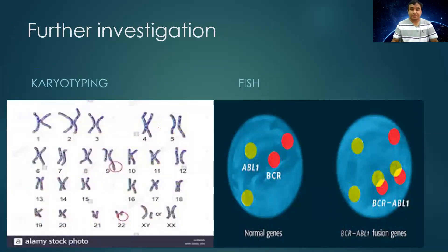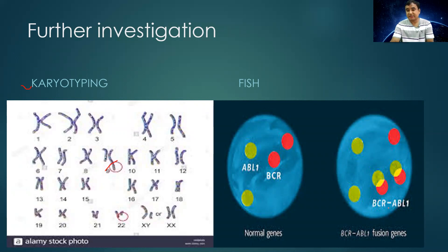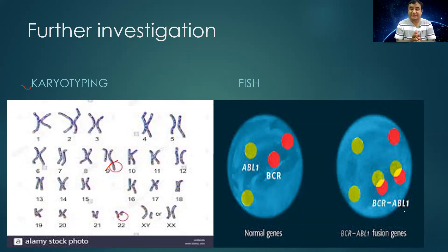We can also perform genetic studies. On karyotyping, you can see a long segment in chromosome 9 and a short chromosome 22 — the Philadelphia chromosome — where there is fusion of the BCR and ABL segment. We can also perform FISH (fluorescence in situ hybridization) to detect BCR-ABL fusion proteins. This is important because only around 90% of CML patients have BCR-ABL fusion. Those with the fusion respond to tyrosine kinase inhibitor therapy, while those without it do not — so testing must be done before initiating therapy.